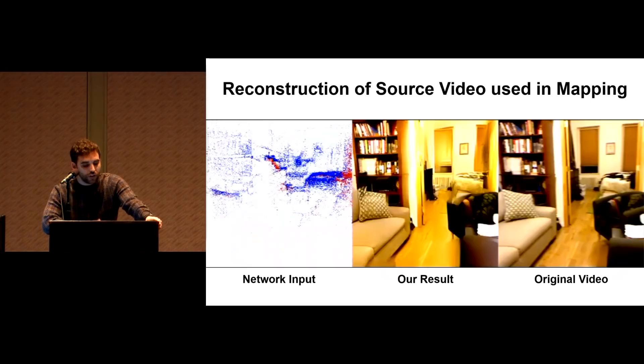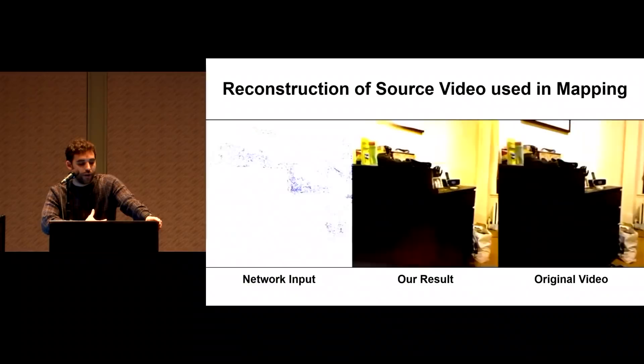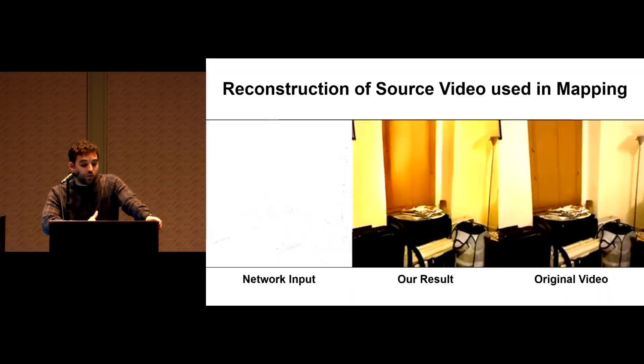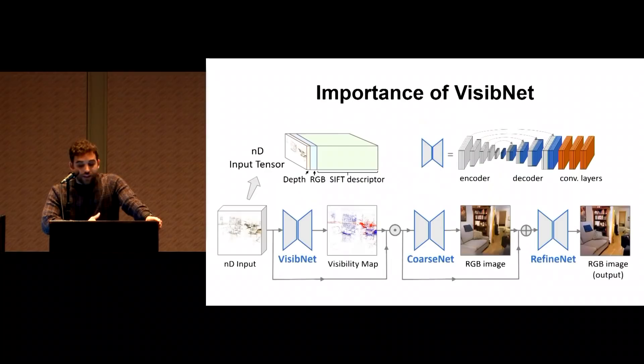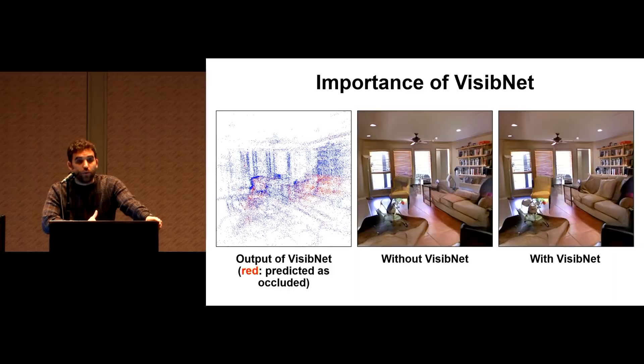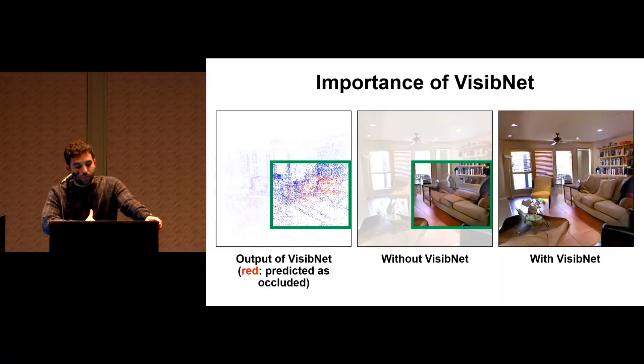So our method can also be used to generate novel views as shown here. Here there's no actual ground truth because the views are novel. So now we examine the importance of VisibNet. So on the left we see the visibility map produced by VisibNet with occluded points shown in red. Focusing on the selected area, we see that there is a high density of occluded points surrounding the sofa. This causes a model trained without VisibNet to incorrectly render the couch without a background. In contrast, when trained with VisibNet, the model correctly reconstructs the scene.